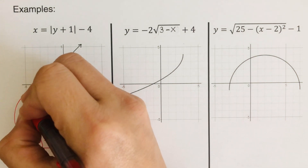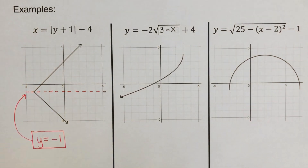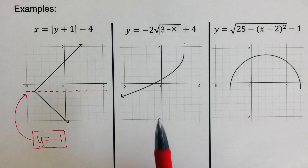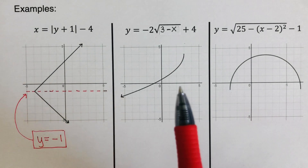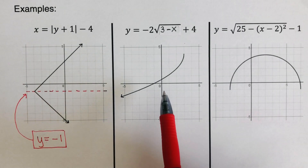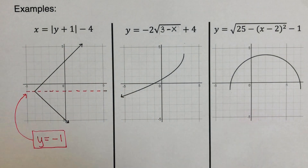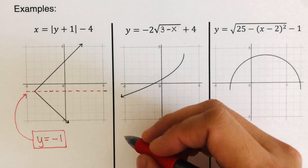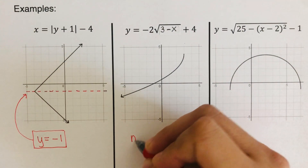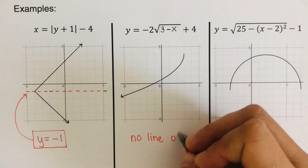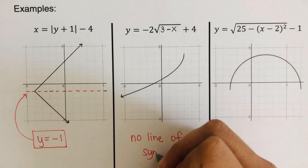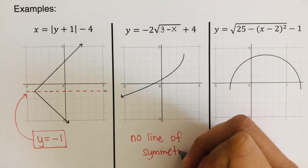In this example right here, there is no way that we can create a line that would divide this graph into two identical parts. So in this case, there is no line of symmetry.